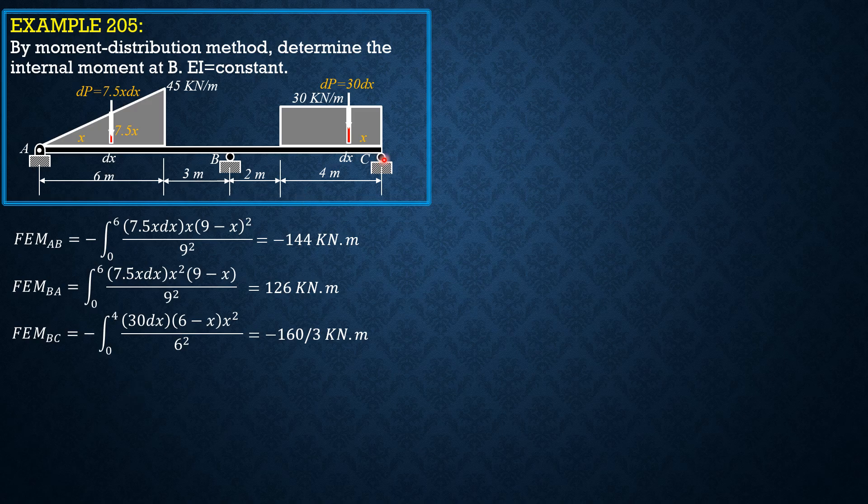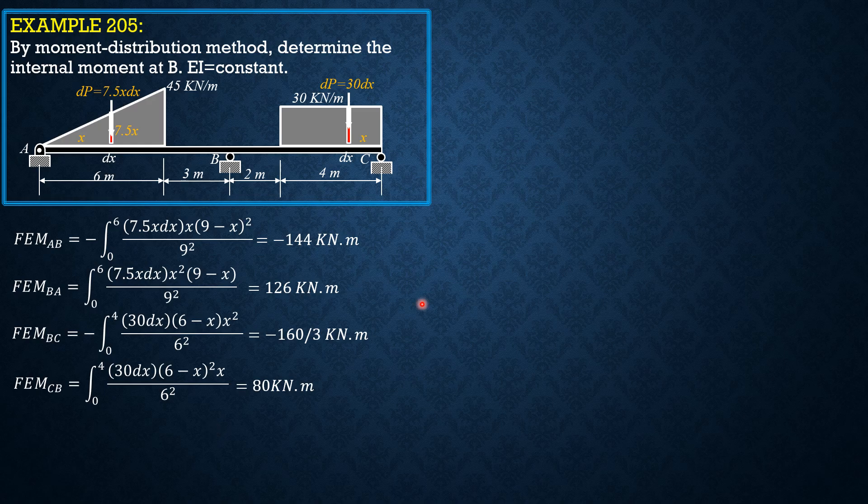While fixed-end moment CB is positive integral 30DX, 6 minus X squared times X over 6 squared, and it is positive 80 kilonewton meter. Let's now tabulate.